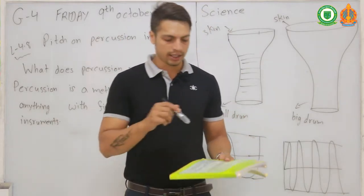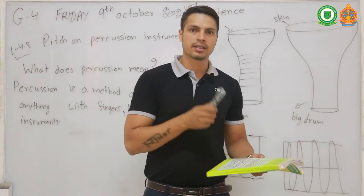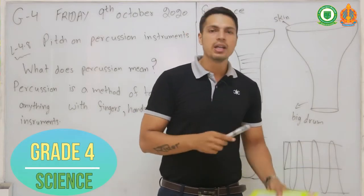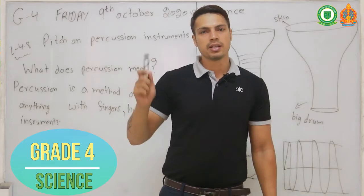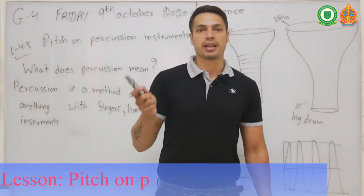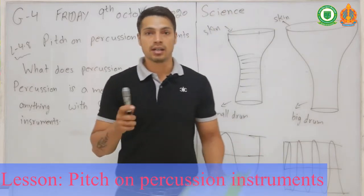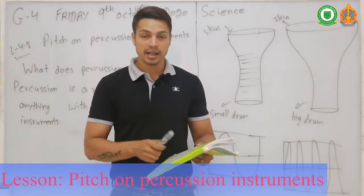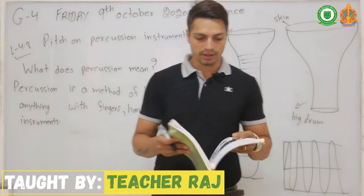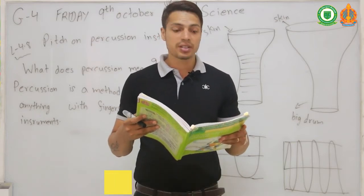To make a sound with a percussion instrument like a drum, you have to hit or shake it. 'Hit' means to tap — like this. 'Shake' means like this. Some instruments work when you shake them, and some need tapping or hitting. That's what we call percussion instruments — hitting or shaking sets off vibrations in the air and makes a sound.